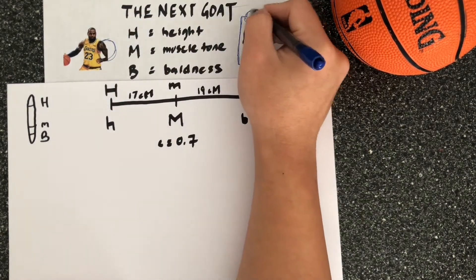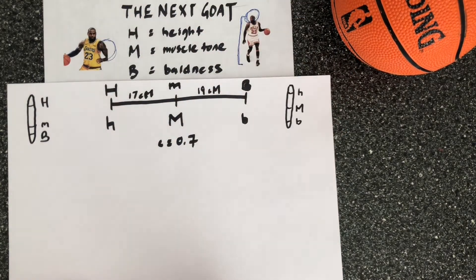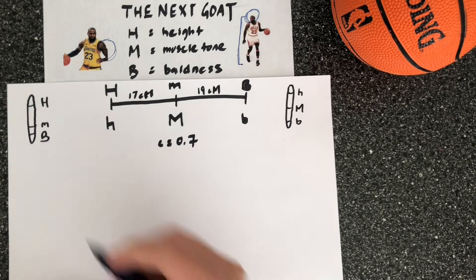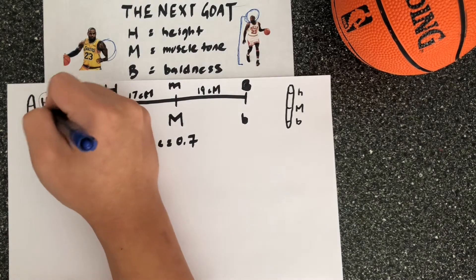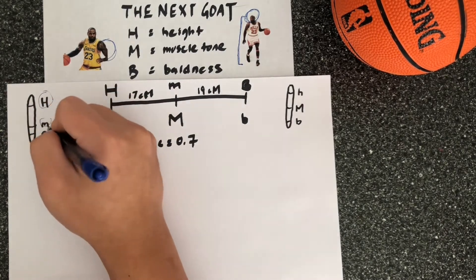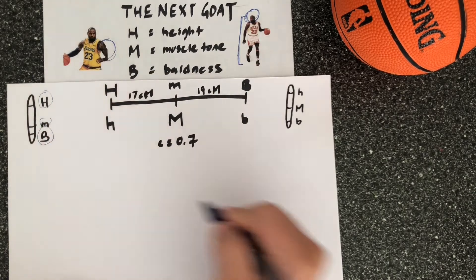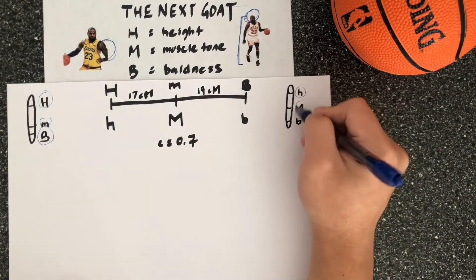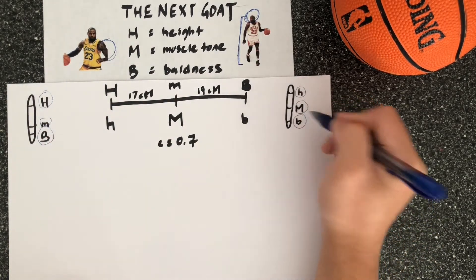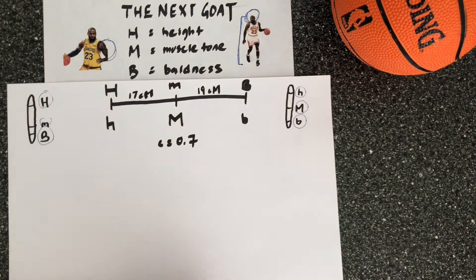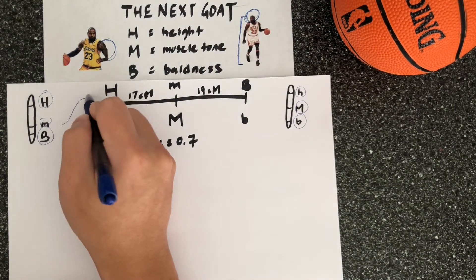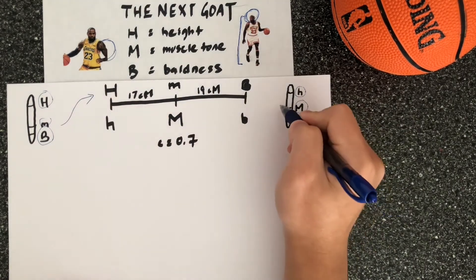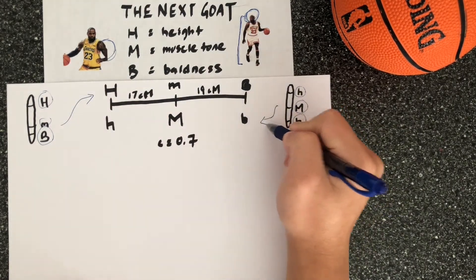In this theoretical individual, we have a parent who is tall, has low muscle tone, and is bald. The second parent is short, has high muscle tone, and has hair. If you were to cross those two chromosomes, you would create an individual who is heterozygous.